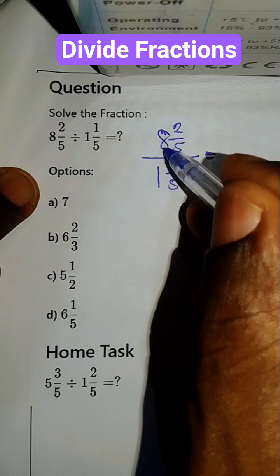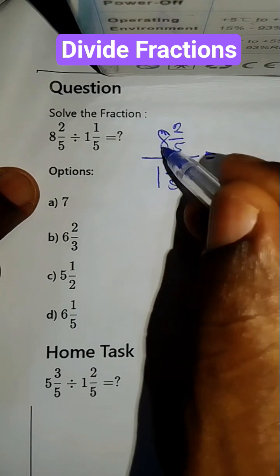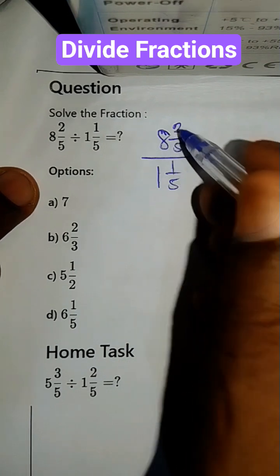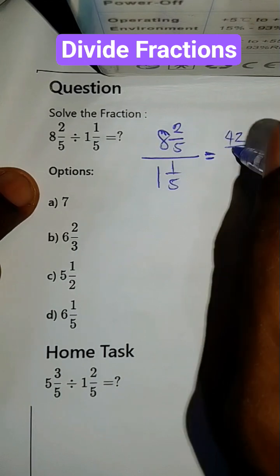5 times 8 is 40, 41, 42. That's 42 all over 5.